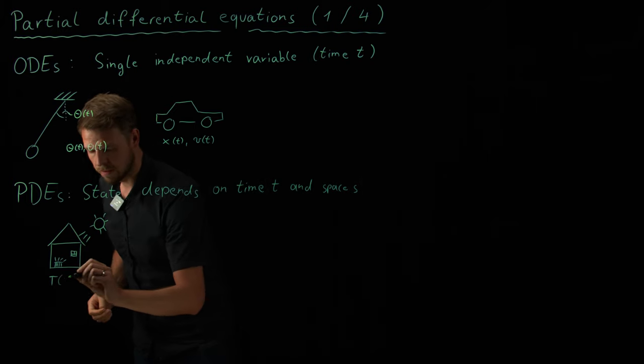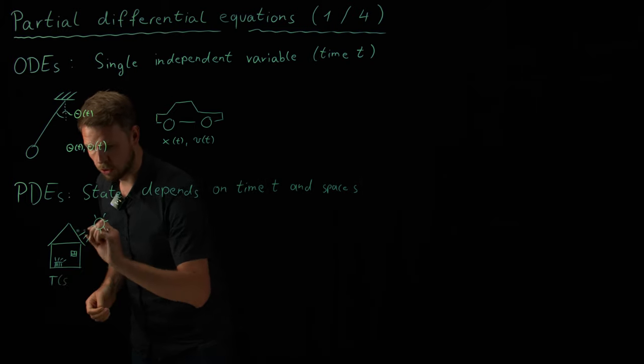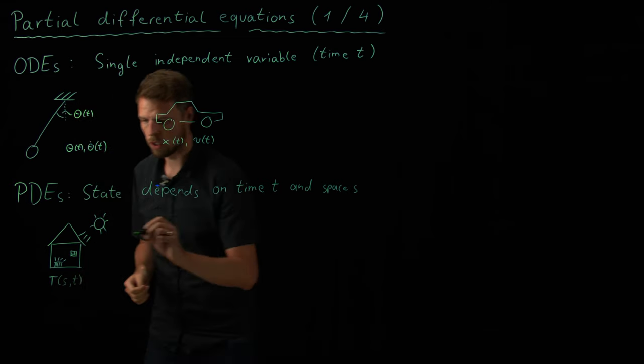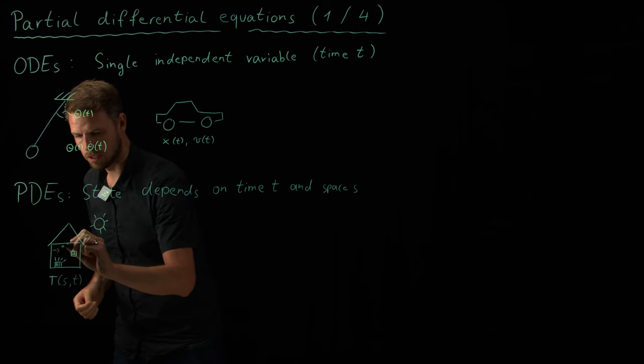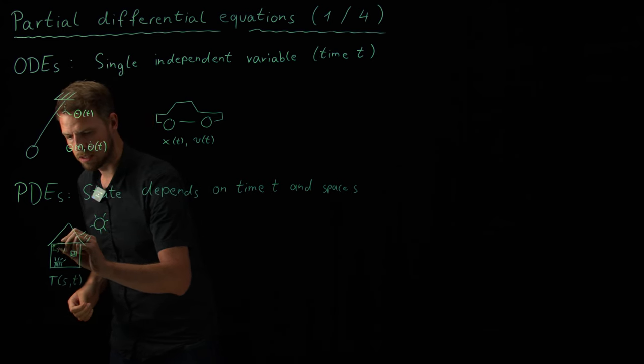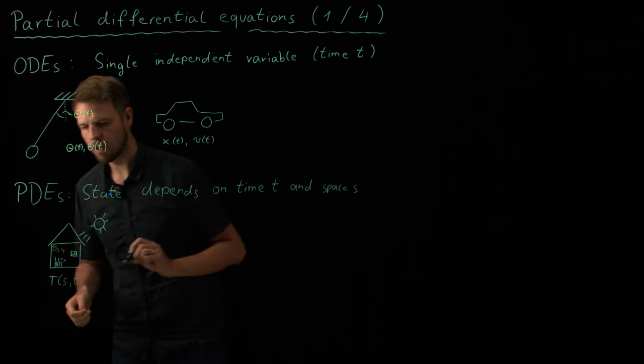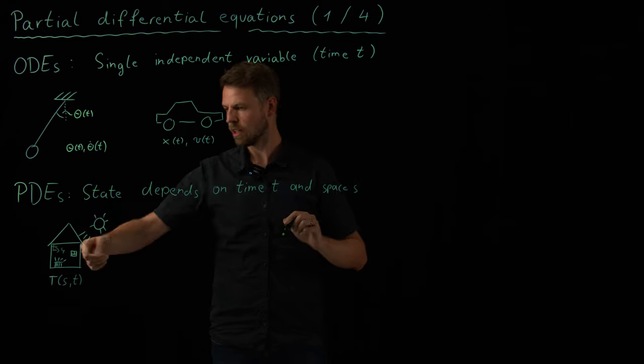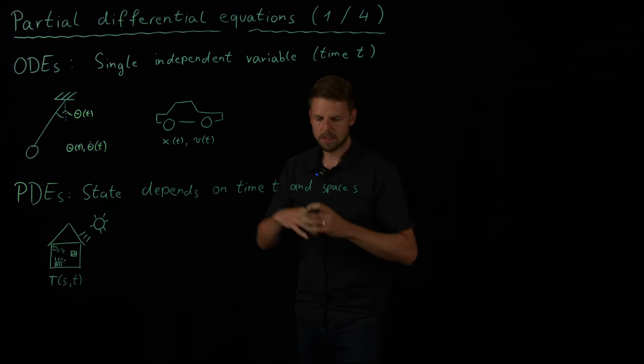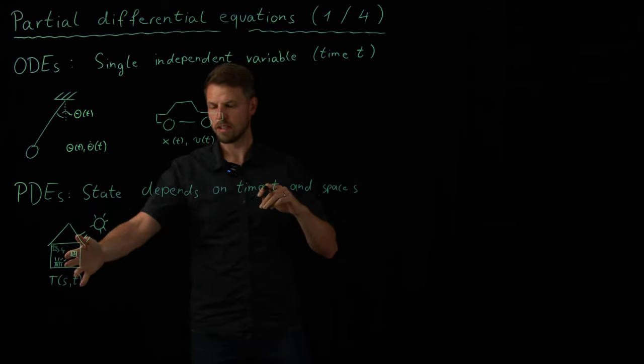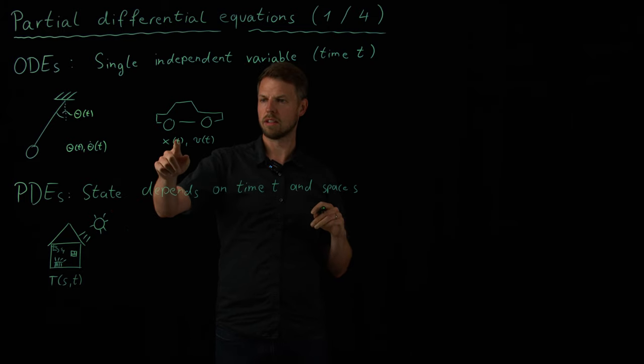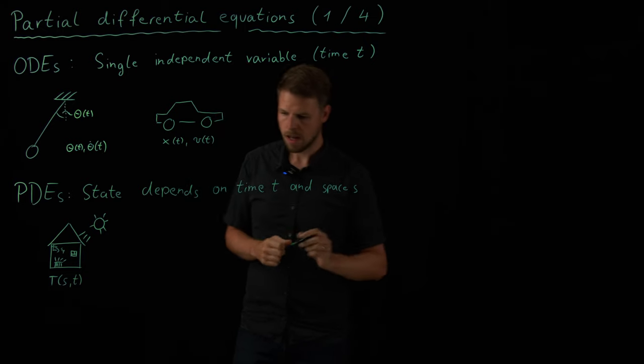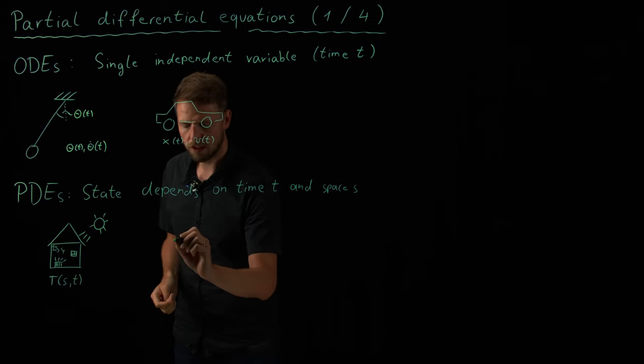So the temperature T is now a function of the position S as well as time T. So now position might be maybe two-dimensional in this example. It's very hard to read, I guess, but you get the idea. Left, right and up, down. But this is the idea. So the temperature is not so easily described by just X of T because the temperature can be described everywhere. And so this is not the single example. We have many, many more examples.